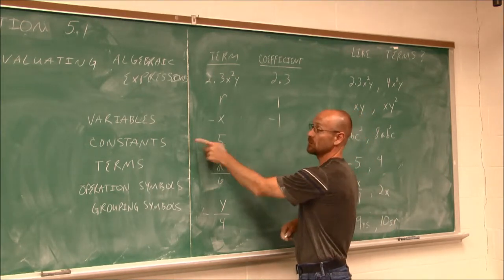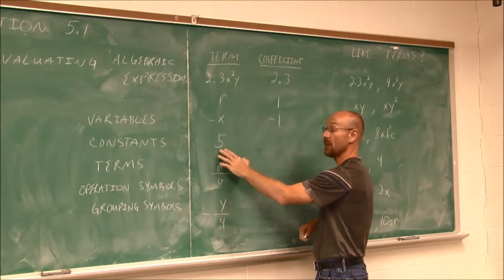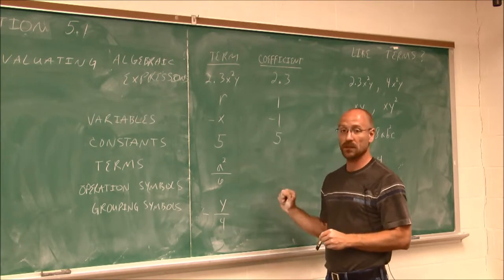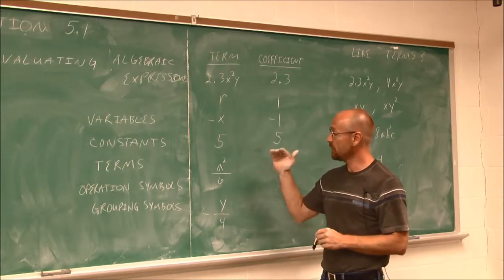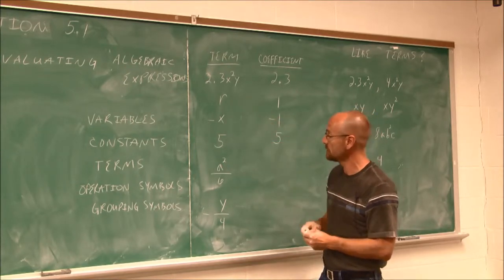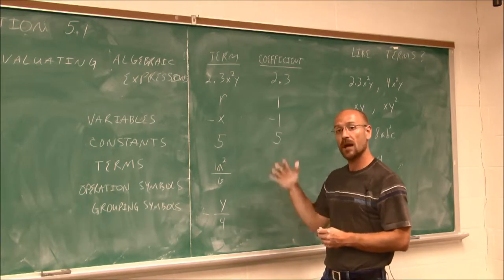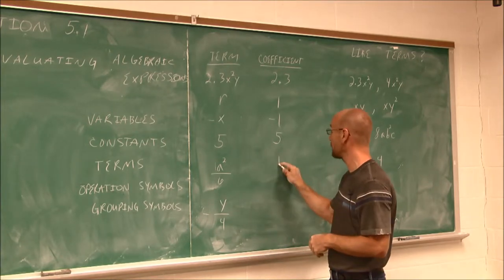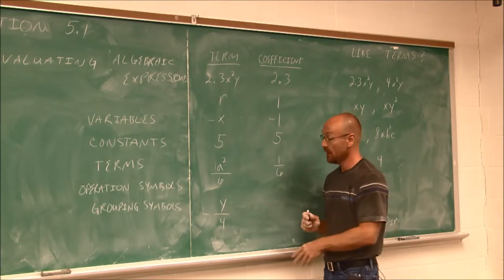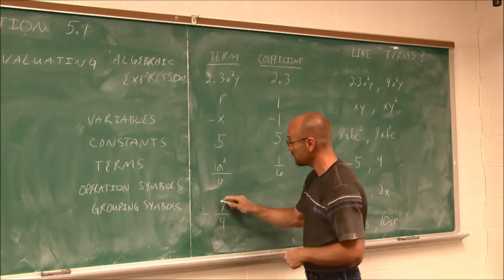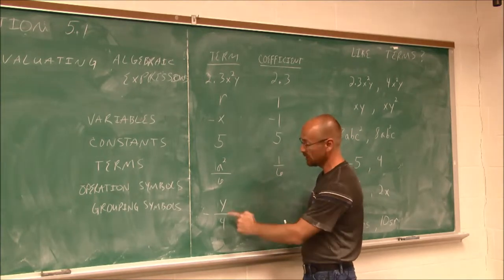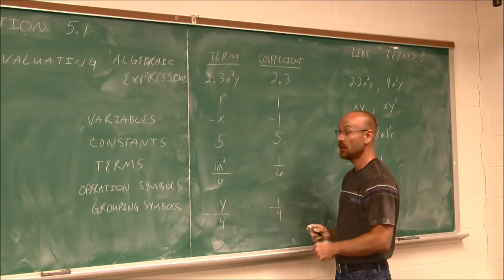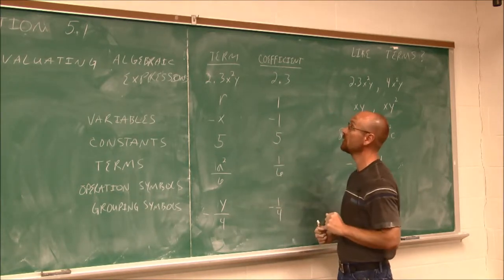This term is a constant — it's 5. Its coefficient is the number that I have. Now, these can be a little tricky because we have division here. But we can think of this in the same way — there is a 1 in front. Now we look at all the numbers of this single term: we have 1 over 6, which is a rational number, one sixth. Same thing if we have a negative — I can imagine a 1 there, so it's 1 over 4. With a negative, it's a negative 1 over 4, or negative one fourth. So hopefully we're comfortable with determining coefficients.